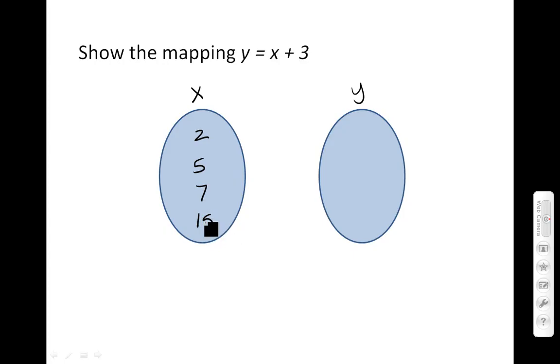In this relationship where y equals x plus 3, what would the outputs or the y's be if x were 2, 5, 7, or 15? So basically, what happens when you add 3 to any of these x values? Well, when you add 2 and 3 together, you get 5. So I'll use an arrow there.